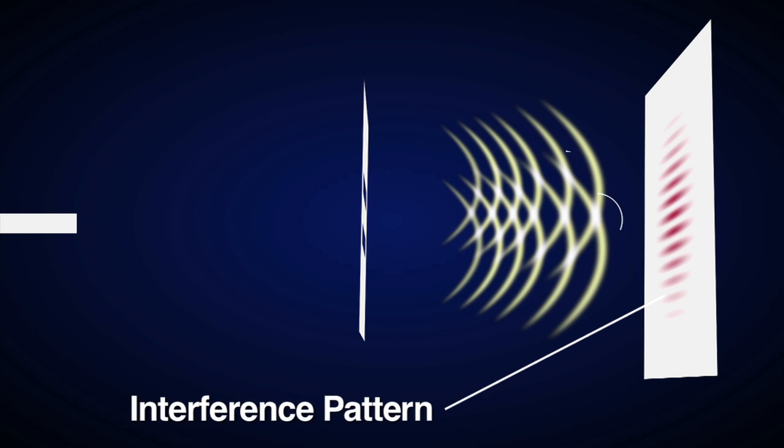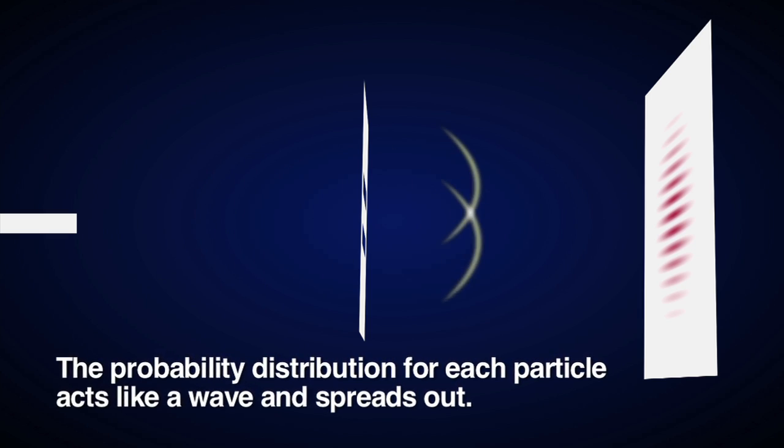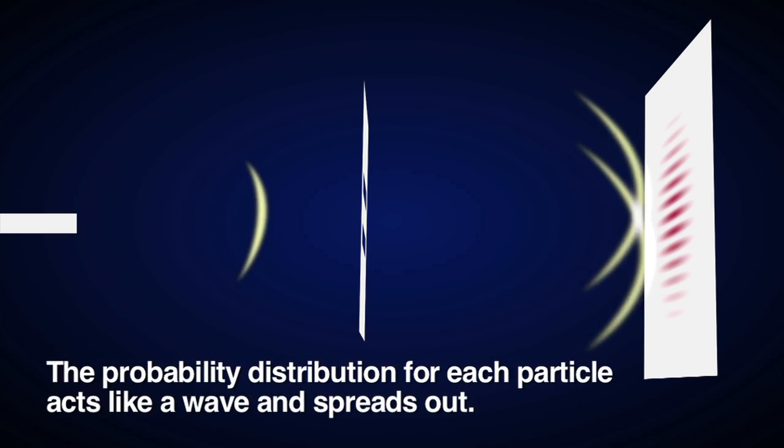Take the double slit experiment. Firing particles at a double slit will cause them to act like waves and interfere with each other, causing an interference pattern on the other side to appear. This is because we don't know the exact location of each particle, so the probability distribution for each particle acts like a wave and spreads out.